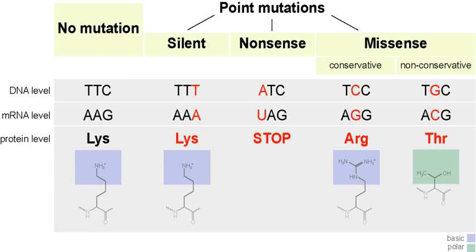Hemoglobin is a protein found in red blood cells responsible for transporting oxygen through the body. It has two subunits: beta-globins and alpha-globins. Beta-hemoglobin is created from the genetic information on the HBB gene found on chromosome 11p15.5. A single-point mutation in this polypeptide chain, which is 147 amino acids long, results in sickle cell anemia — an autosomal recessive disorder affecting 1 in 500 African Americans and one of the most common blood disorders in the United States. The single replacement of the sixth amino acid, glutamic acid, with valine results in deformed red blood cells.